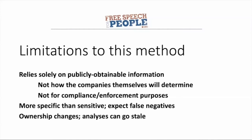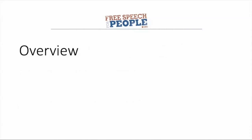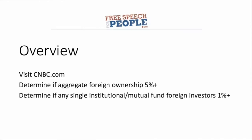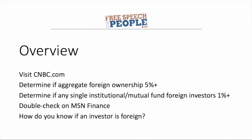Here's a quick overview of how we're going to screen for foreign-influence companies. We're going to start at CNBC.com, which uses public and proprietary data sources to give information about shareholder holdings. We're going to first see if the aggregate foreign ownership is five percent or more by looking at geographic concentration. Then we'll look at the list of top institutional and mutual fund foreign investors to see if any hold one percent or more. We'll double-check on the MSN Finance website, which has some additional information.